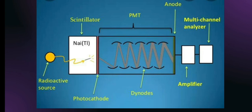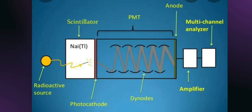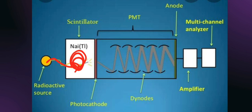When the radioactive material emits gamma radiation, this gamma radiation falls on the scintillator. The gamma radiation releases electrons from the atoms of the scintillator, and this electron excites all the atoms along its path. When these excited atoms return to their ground state, they release a flash of light. These flashes of light cause the photocathode to emit electrons.